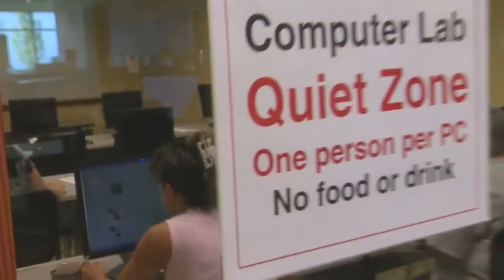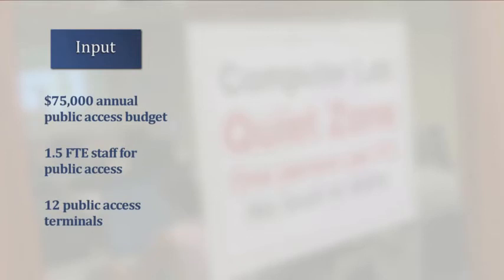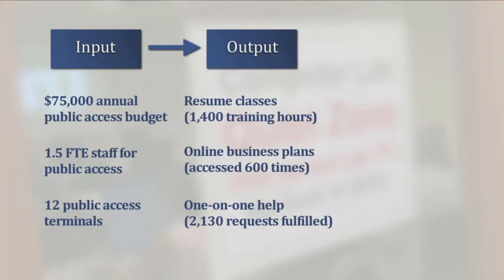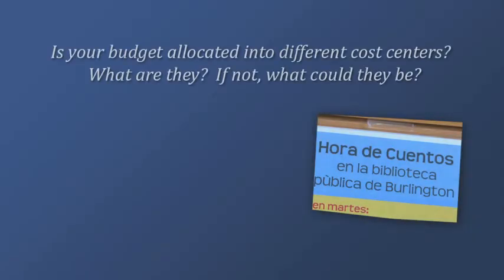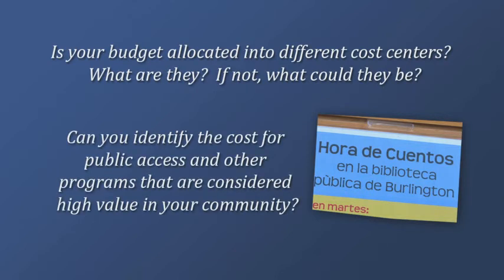Try to isolate the costs of the public access technology services in particular. If you just have a budget that shows all of your staff and all of your resources, it might be a good idea to do an activity-based budget that isolates the costs of your public access resources so that you can really show a direct connection between those inputs, the outputs that you create in terms of public access technology, and the outcomes that you're intending for your patrons. Is your budget allocated into different cost centers? Can you identify the cost for public access and other programs that are considered high value in your community?